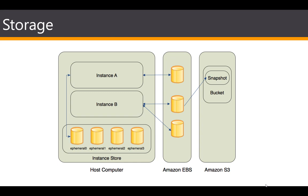Instances that use instance stores for the root device automatically have one or more instance store volumes, with one serving as the root device volume. When you launch the instance, the image is copied to the root volume. Any data on the instance store volume persists as long as the instance is running, but the data is deleted when the instance is terminated. That's why EBS is recommended — with EBS, data is not deleted when the instance is stopped or terminated. With an instance store, if the instance is terminated or hardware fails, all your data is lost.